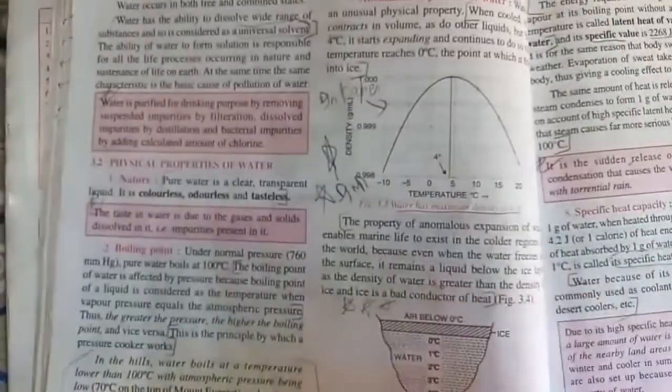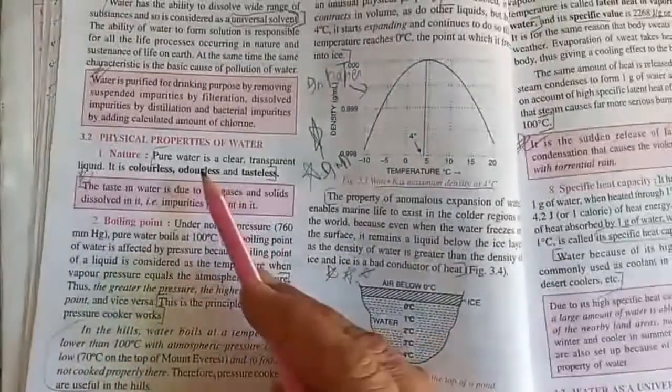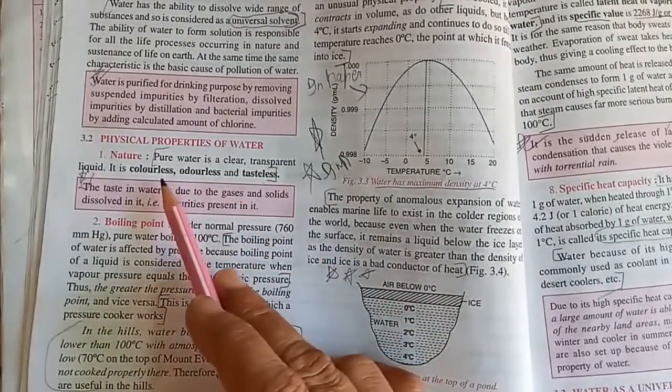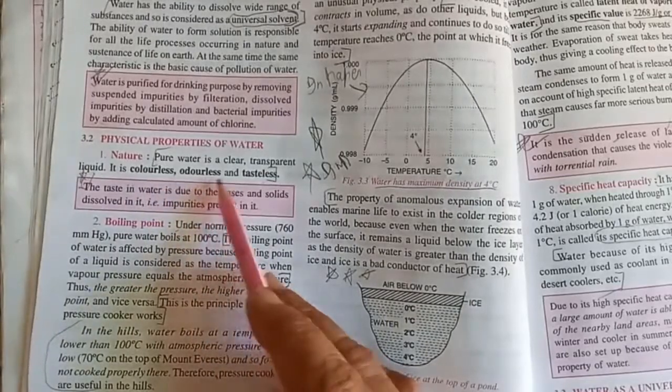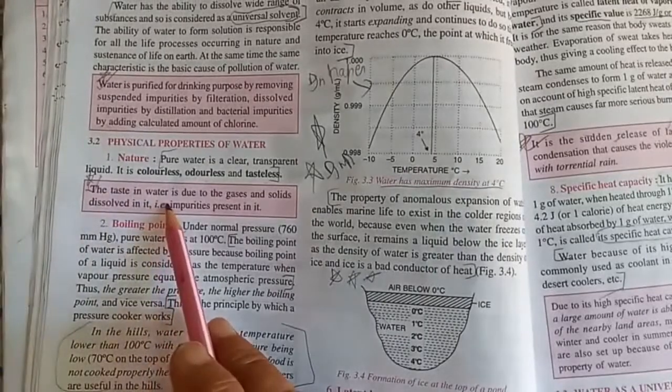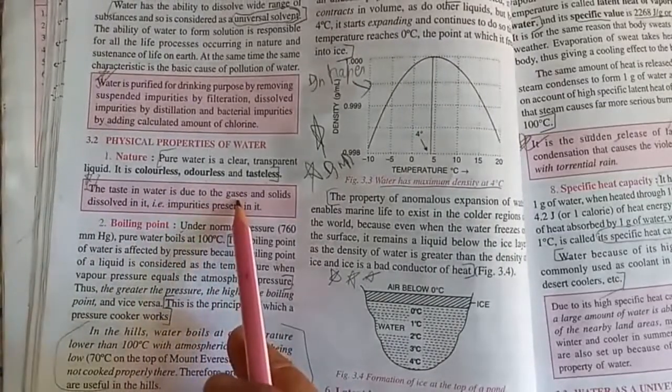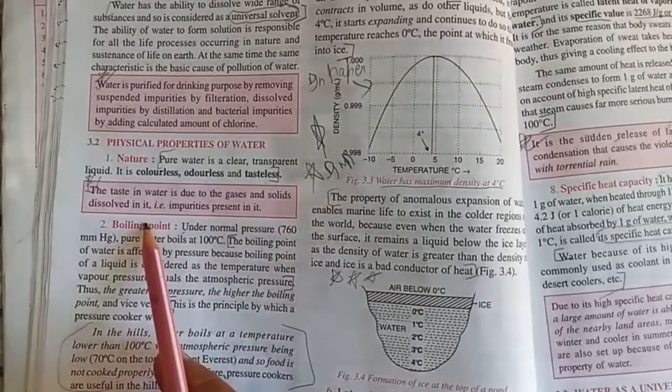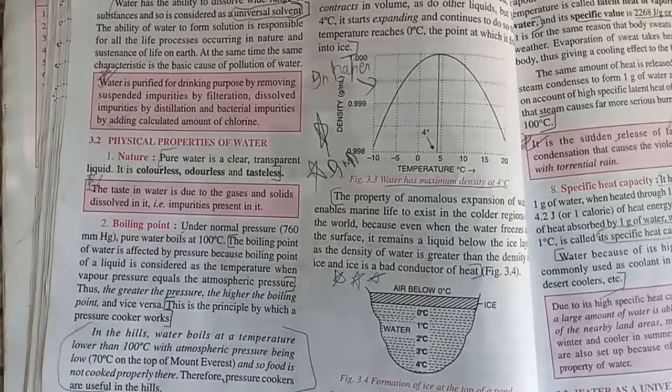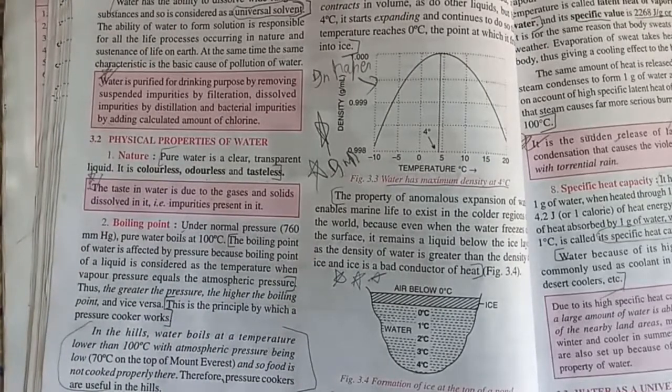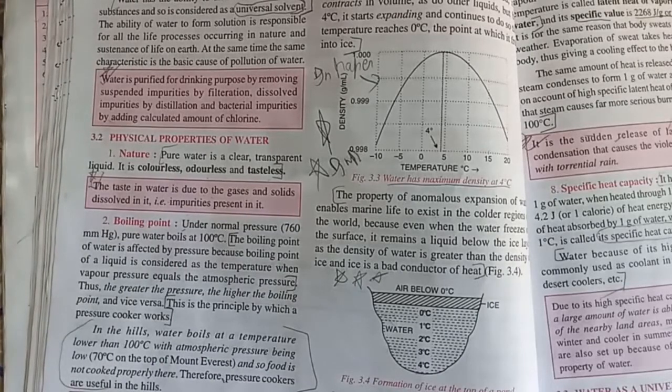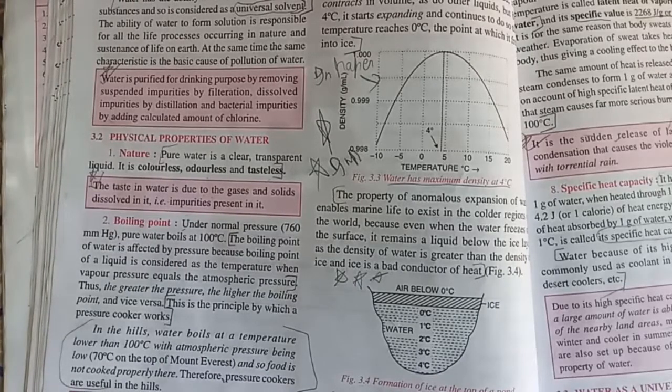Physical properties of water: you know the nature of water, that pure water is clear, transparent, colorless, odorless, and tasteless. Generally the taste in water is due to gases and solids dissolved in it, that is impurities present in it. Pure water has no taste, but the water which we usually drink has taste because of the presence of impurities.